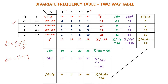The first step is to compute row-wise totals: 4+4+2+1 = 11, 3+5+4+2 = 14, and similarly 21 and 21, giving a total of 67 — matching the problem statement. Column totals give 10, 19, 20, 18, also summing to 67. Next, multiplying f by dy and summing gives sigma f·dy = 52, and multiplying f by dy² and summing gives sigma f·dy² = 116.